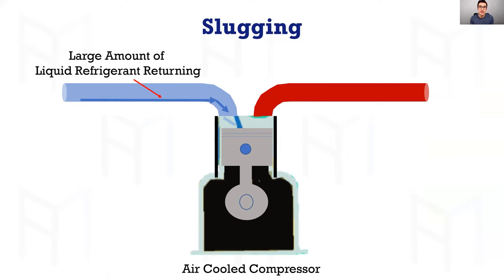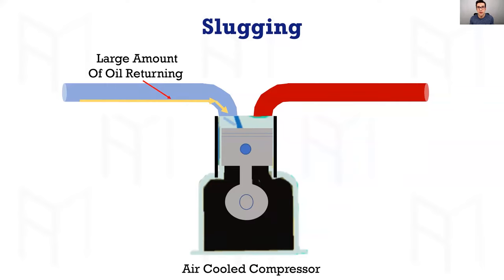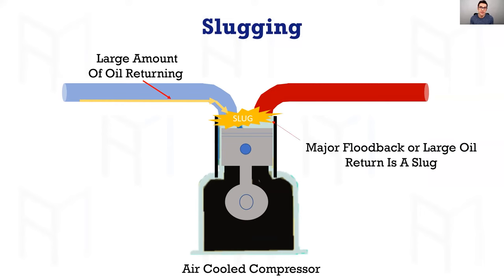It cannot absorb the heat to boil off, so you have no superheat and liquid starts making its way back — or it could be oil. A large amount of oil returning could be due to insufficient defrost, too much oil in the system, or improper slope. All of a sudden you have a slug, and you'll see broken suction or discharge valves inside and bent backers on the valve plate. Take the head off to see what happened and why the compressor isn't pumping. Major flood backs or large amounts of oil returning to the air-cooled compressor cause the slug.